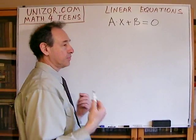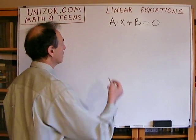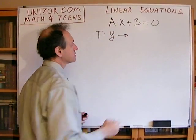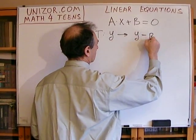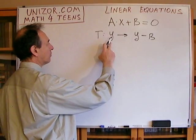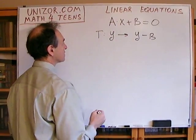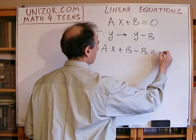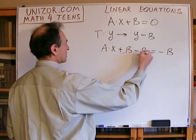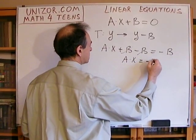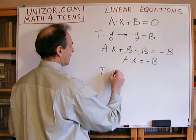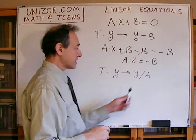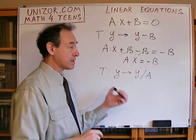Now we will go with the easy solution to this equation. Obviously, we have to apply transformations, as usual, to solve the equation. The first transformation is converting both sides by subtracting b, so each number becomes that number minus b. Applying this to the left part gives ax, and the right part gives minus b. This simplifies to a times x equals minus b. Next, I divide by a.